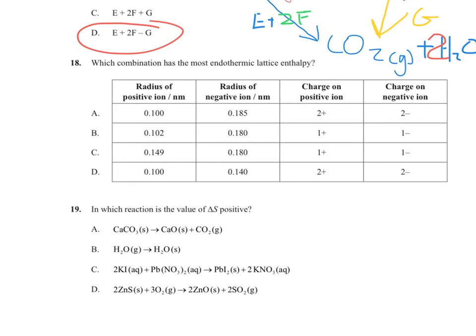Question 18 asks which combination gives the most endothermic lattice enthalpy. A high endothermic lattice enthalpy requires high positive and negative charges — ruling out options B and C which have charges of 1. Between A and D, the positive ion radii are the same, but A has a much larger negative ion radius. A smaller negative ion has greater charge density, so the ions can get closer together with stronger electrostatic attraction. Therefore, D gives the greater endothermic lattice enthalpy.